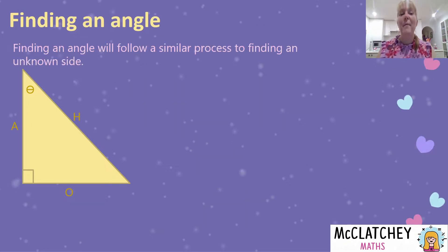So let's talk now about how do we find an angle. It follows a similar process to finding an unknown side. We firstly label our sides. Secondly, we choose the right formula based on what we've been given and what we need to find.